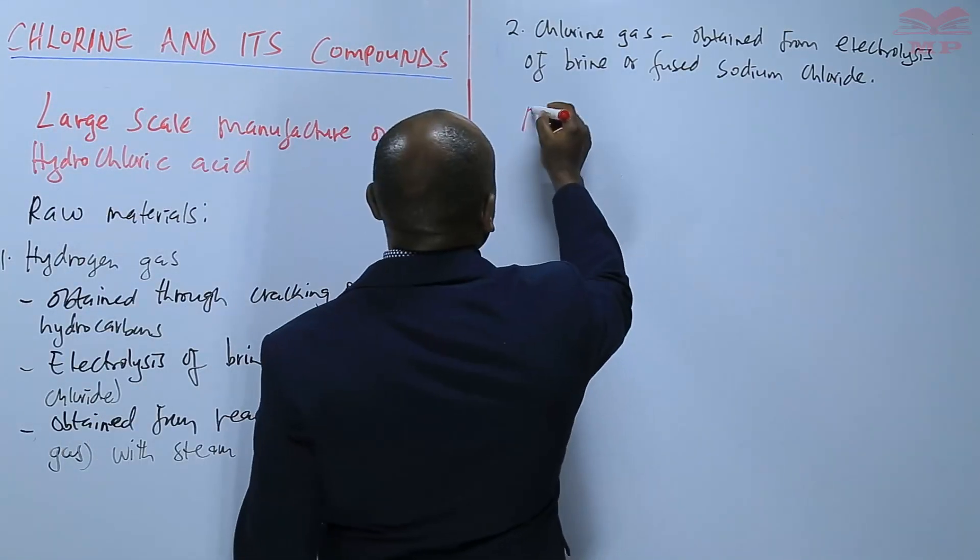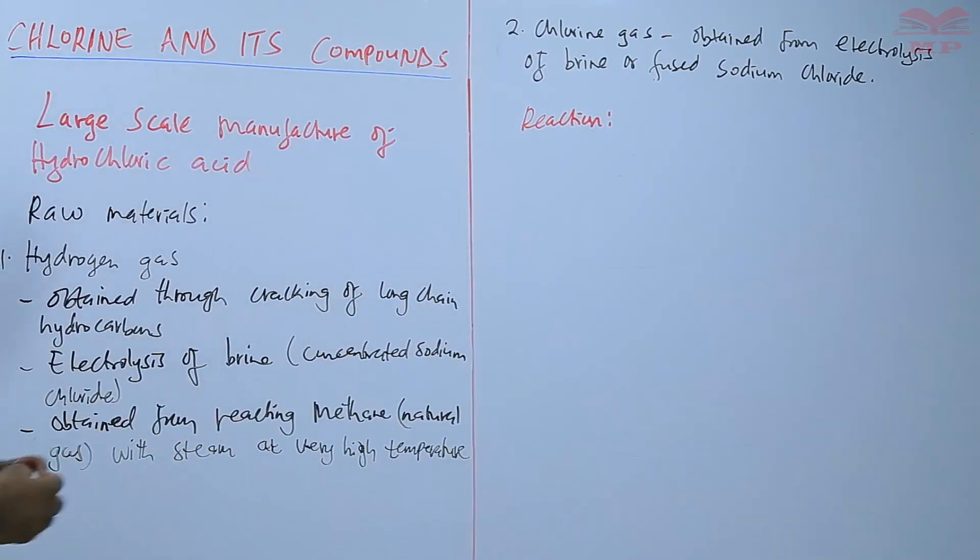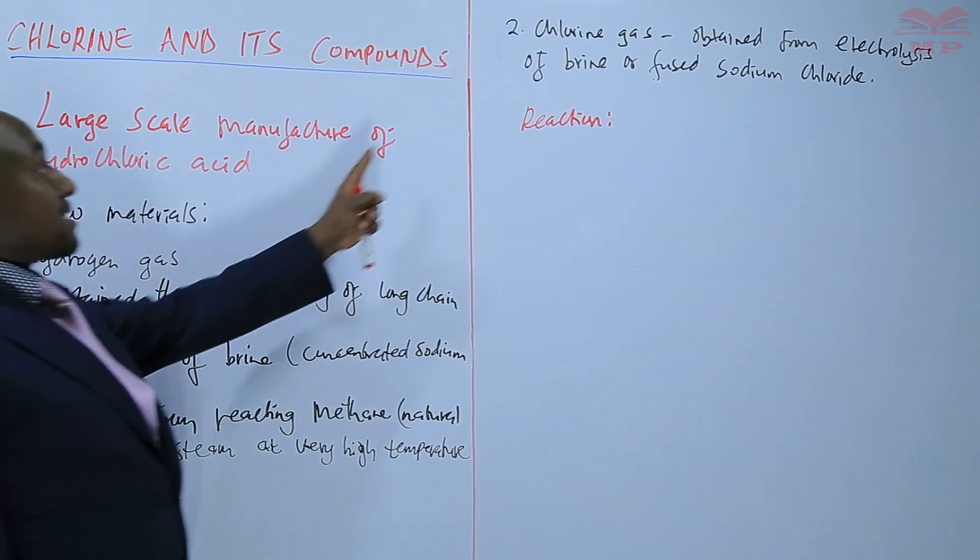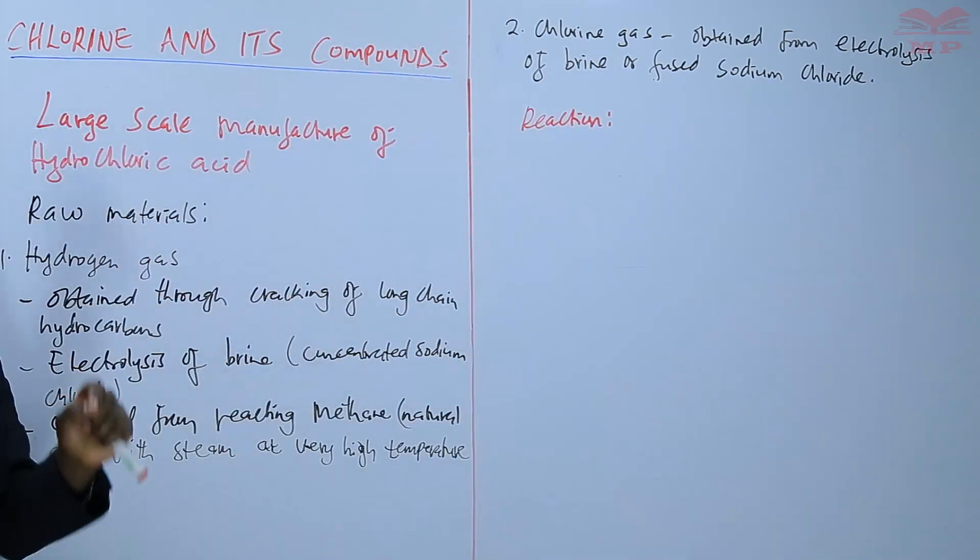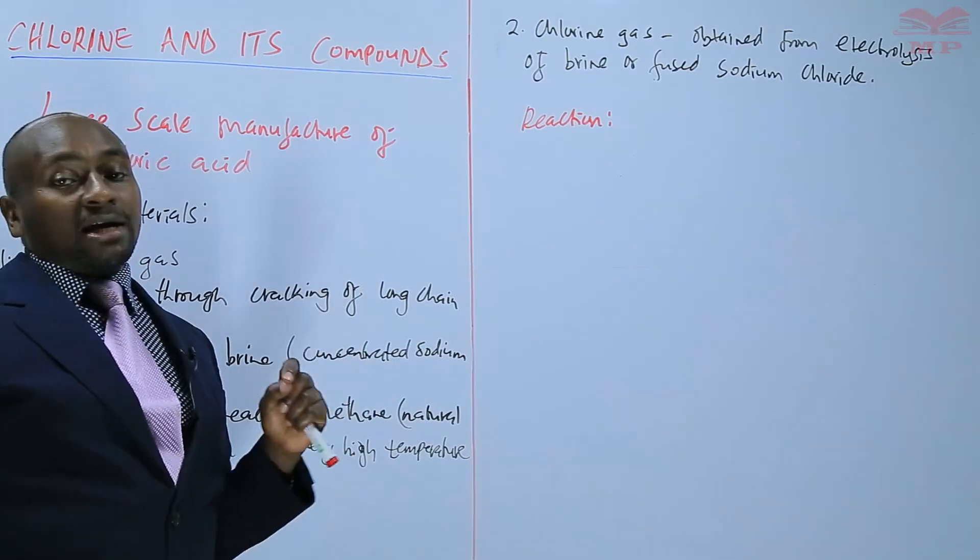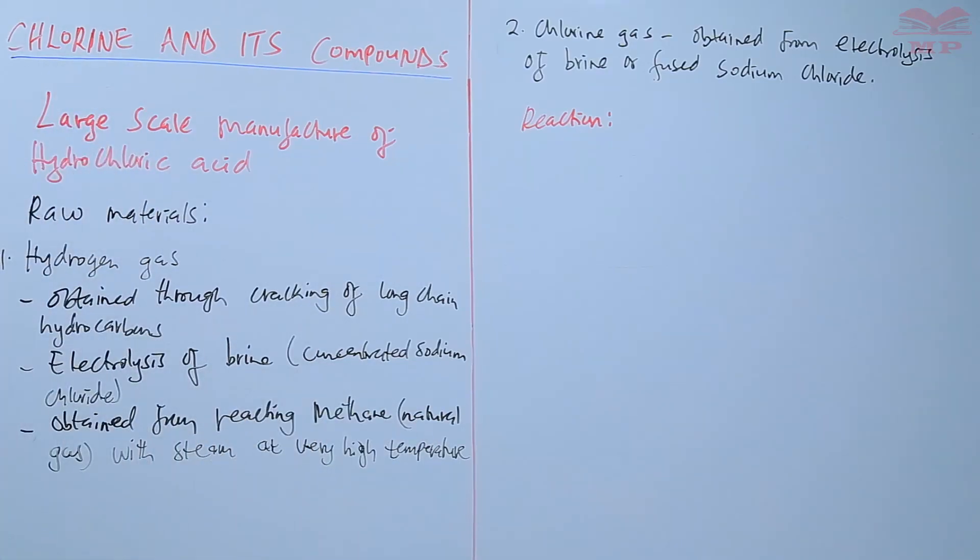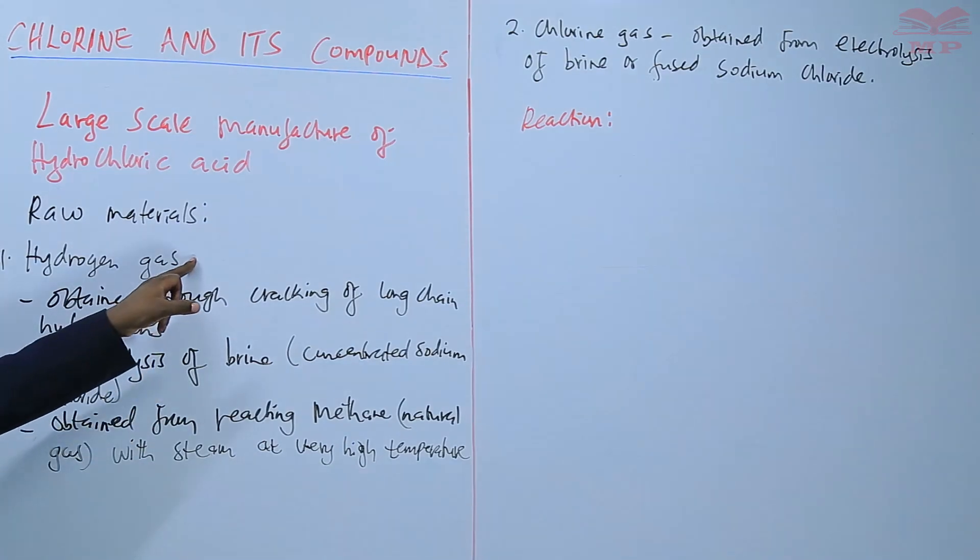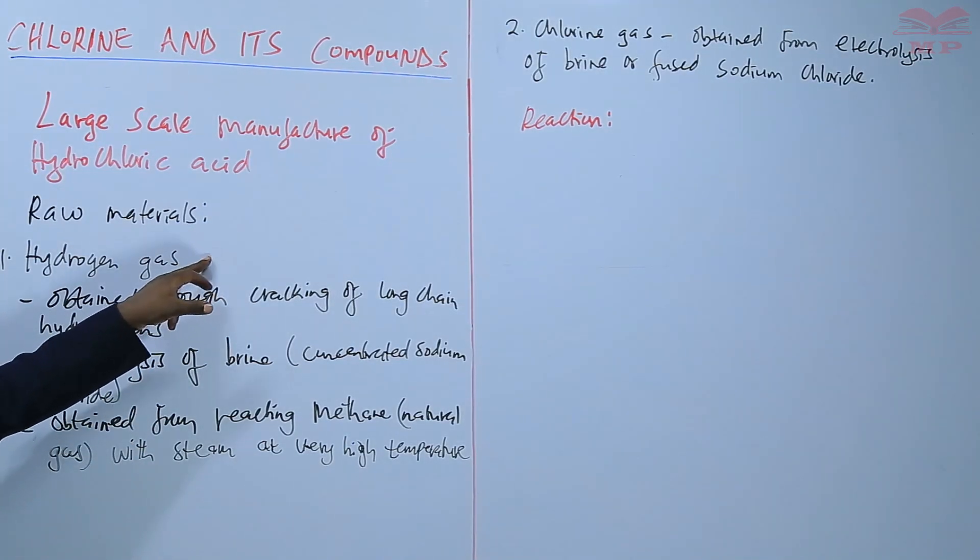There is the reaction that takes place. And in this reaction, hydrogen gas is reacted with chlorine gas to form hydrogen chloride gas. Hydrogen plus chlorine gas, we get hydrogen chloride gas. But that reaction is likely to be very explosive, and that is because of hydrogen gas, which is explosive, especially when it comes into contact with air.